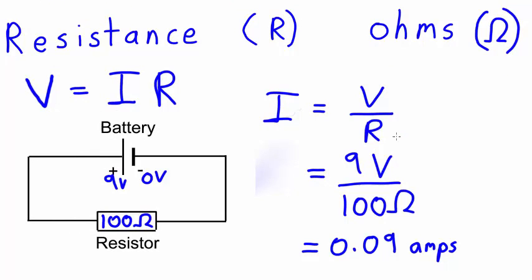There we go. 9 volts divided by 100 ohms gives us 0.09 amps. And that's how you use Ohm's Law.